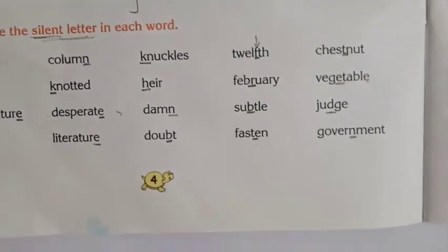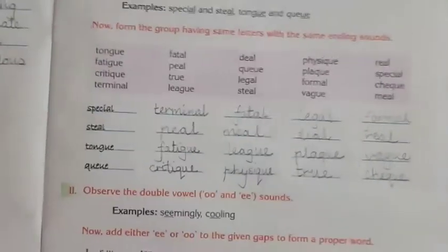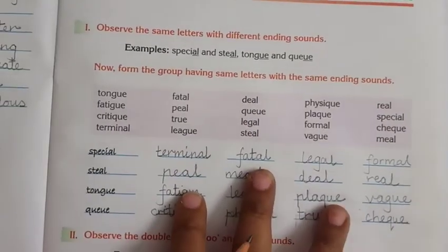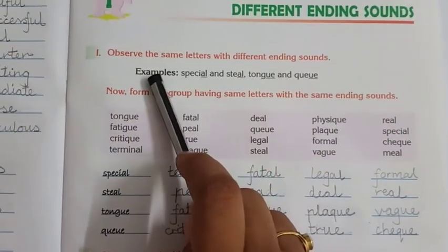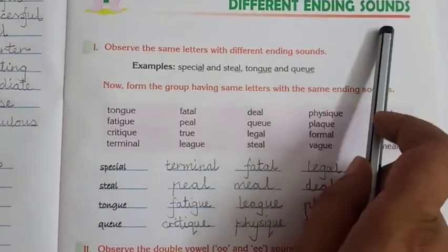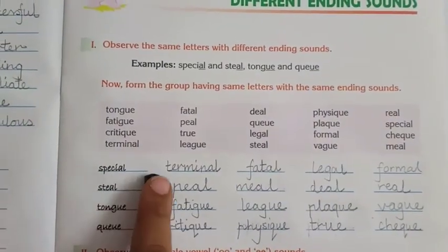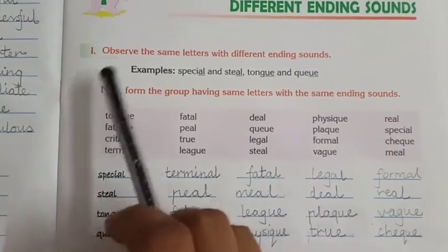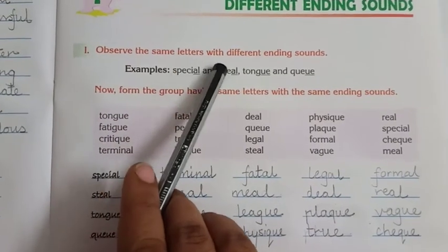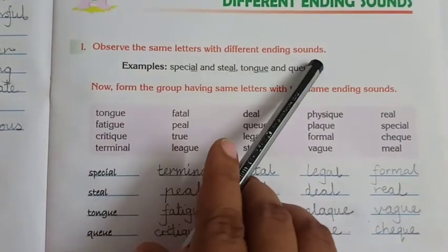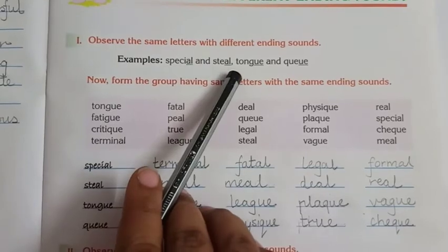Moving on to page number five. I have done this for you. This is about different ending sounds — words which are ending in different sounds. Observe the same letters with different ending sounds. For example: 'special', 'steel'.